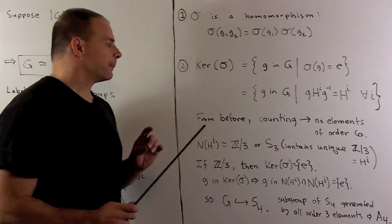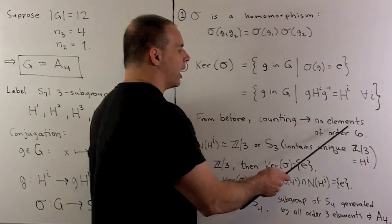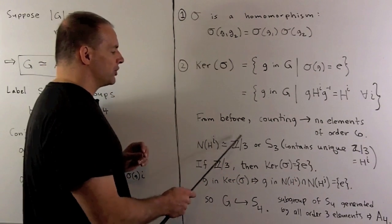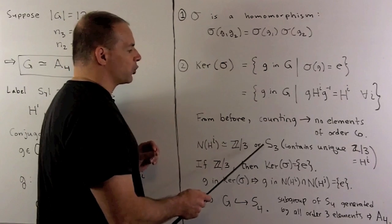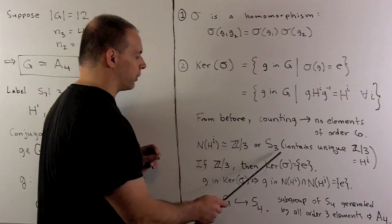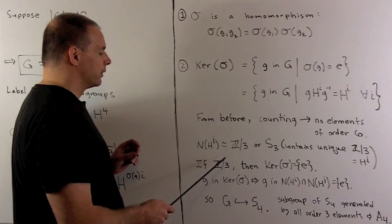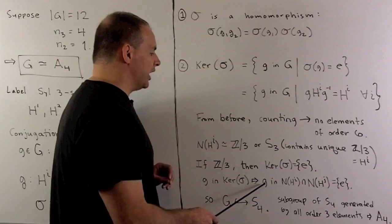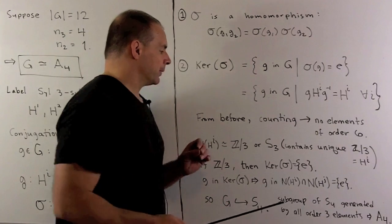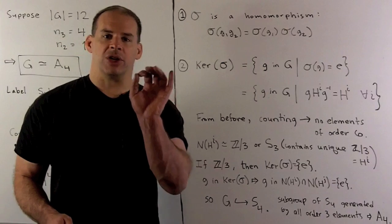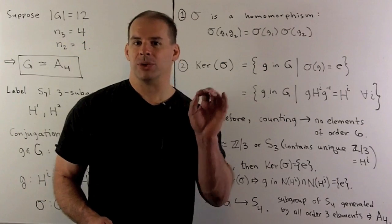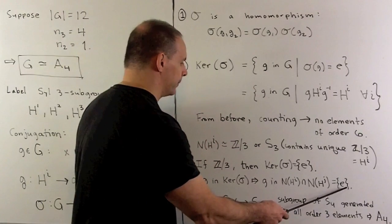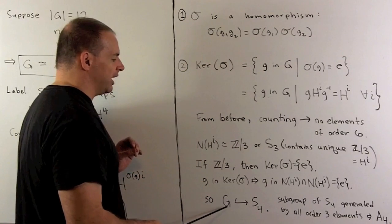From our counting trick, G has no elements of order 6. That means the normalizer of a Sylow 3-subgroup is either the Sylow 3-subgroup itself or an S_3 containing it. In the first case, the kernel of sigma is the identity. If g is in the kernel, then g is in the normalizer of each H_i. Considering two of them, the intersection of H_i and H_j — both isomorphic to Z_3 — must be the identity. So that shows g equals e, giving us an injective homomorphism from G into S_4.